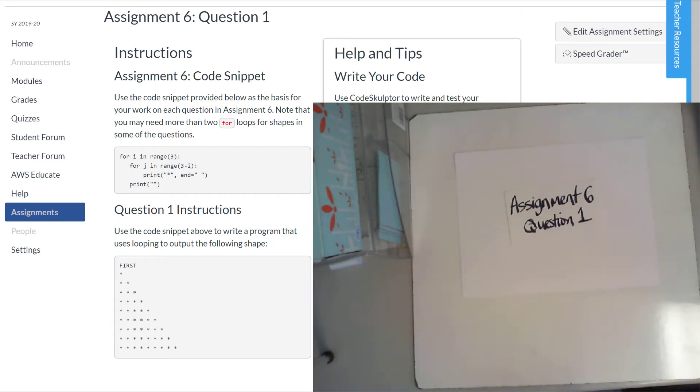Here's some help on assignment six question one. They start you off with a code snippet that looks like this and they want you to produce a picture that looks like this for the first of four questions.